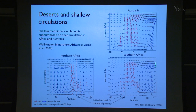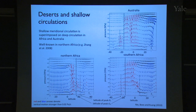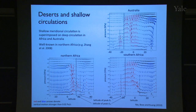Looking at the Southern Hemisphere monsoons — Australia and Southern Africa — where the summer pole is on the left, we again see the deep monsoon overturning but also shallow ascent poleward of the deep ascent. This is the desert heat low: warm air rising over the desert that lies poleward of the monsoon region and flowing toward the equator into the deep moist baroclinic overturning circulation.